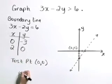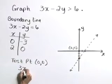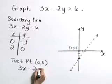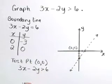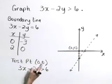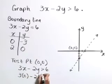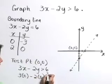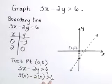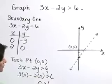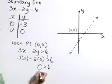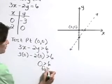In our original inequality, 3x minus 2y is greater than 6, substitute 0 for x and 0 for y to get 3 times 0 minus 2 times 0. Is this greater than 6? That's 0 minus 0, or 0 is greater than 6. No, that's a false statement.